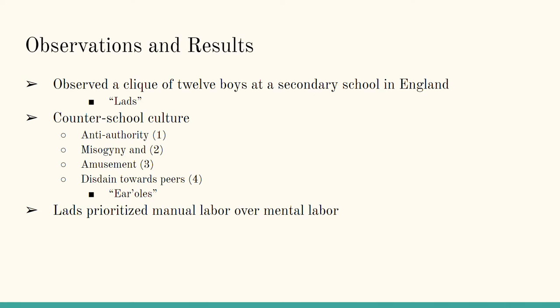What I mean by counter-school culture is that they showed anti-authoritative attitudes. They also showed misogyny and racism. I also have listed amusement — what I mean by amusement is just, in essence, sort of living life to the fullest without a care for the repercussions when it comes to school. Like if you picture someone just cutting class and going to a party, that's doing that for amusement — that's what I mainly refer to with that.